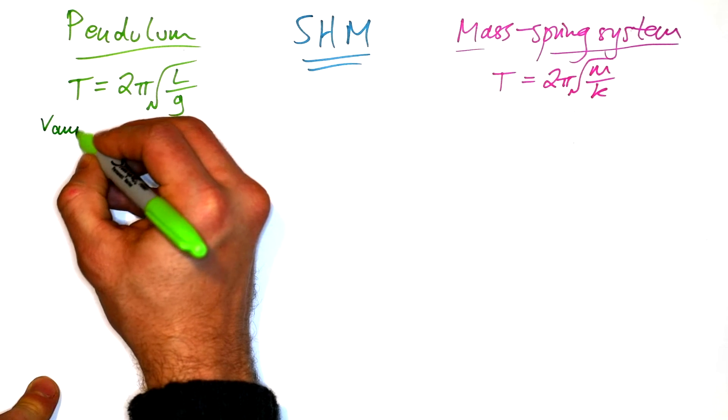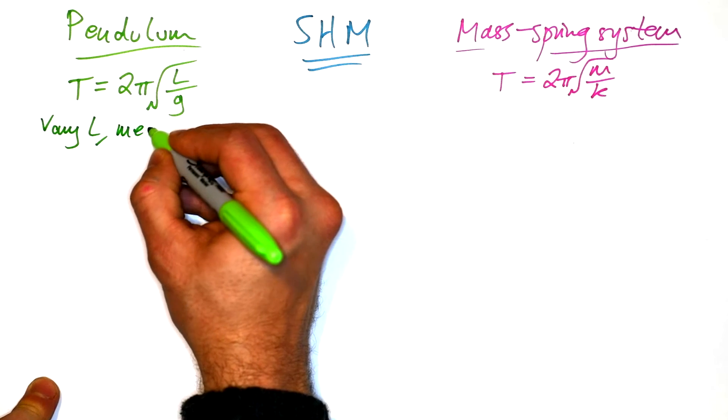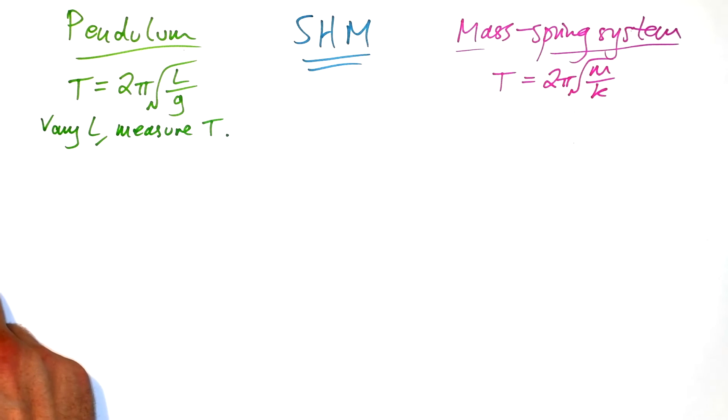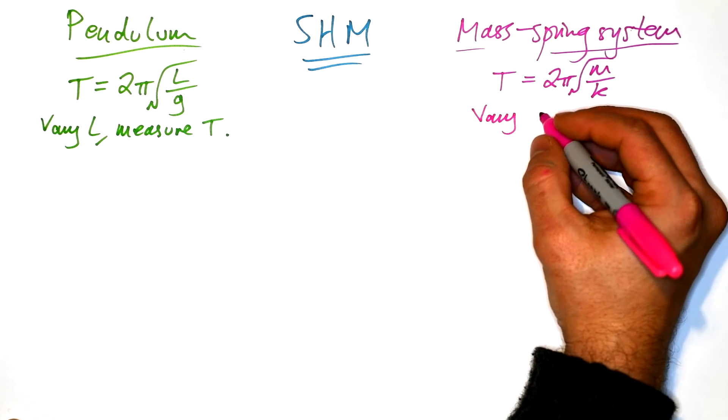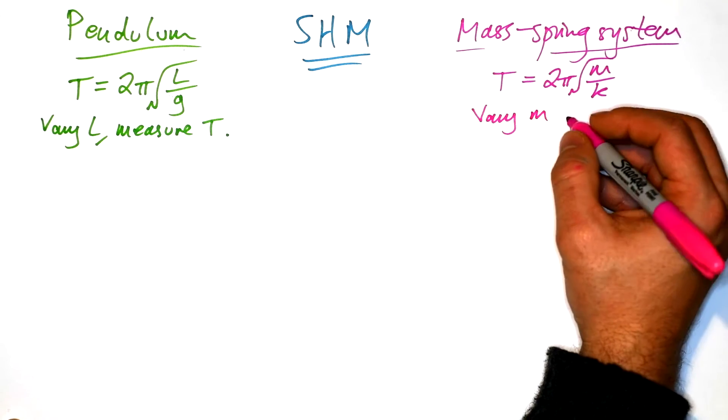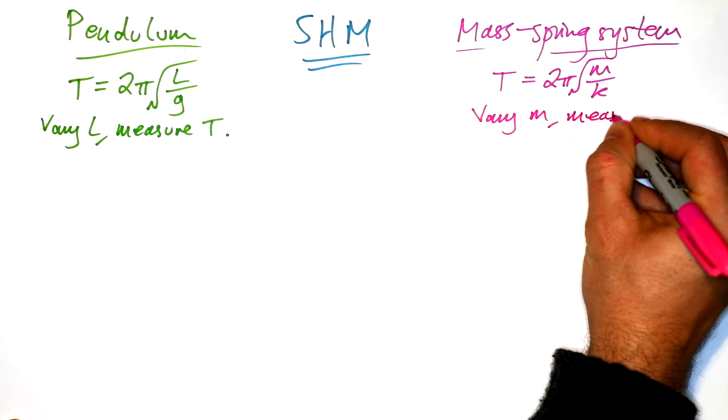So what we're going to do with the pendulum is vary L. That's our independent, and we're going to measure the time period T. That's our dependent. For the mass spring system, we're going to vary the mass. We could vary k as well, but it's much easier to vary m. And again, we're going to measure T.